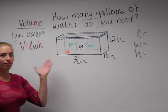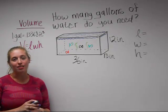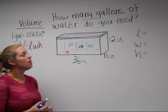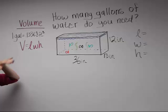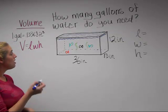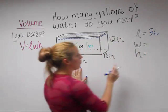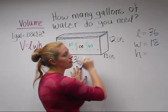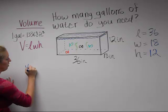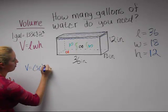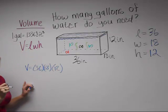Now we're going to do a real-world example of volume. Let's say you get a new fish tank for Christmas and you need to know how many gallons of water you're going to need to fill your tank. We need to find the volume of the tank and then use a conversion factor to find how many gallons you need. Our length is 36, our width is 18, and our height is 12. So our volume is 36 times 18 times 12, which is 7,776.